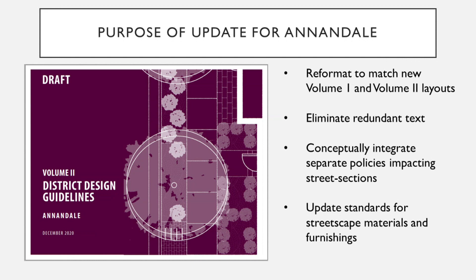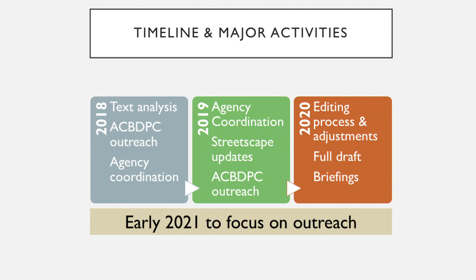In the case of Annandale, design guidelines were created in 2011 following the update to the Comprehensive Plan. At the time, no Volume 1 for the CRDs and CRAs existed. However, due to the creation and adoption of Volume 1 design guidelines in 2018, it was decided that all areas would have a separate Volume 2. Additionally, best practices have evolved considerably since 2011, so an update was determined necessary. This process began in late 2018 with text analysis and agency coordination, continued in 2019 with streetscape updates, and resulted in a final draft in December 2020.